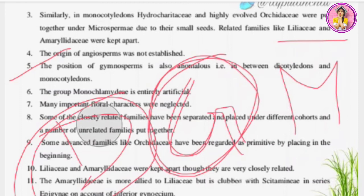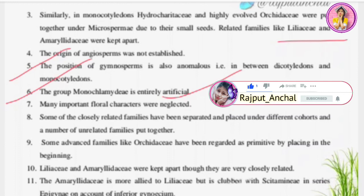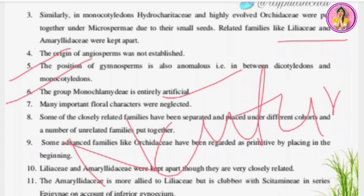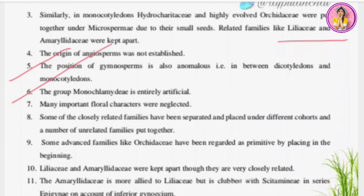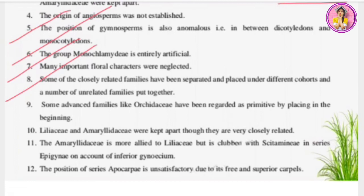Demerit six: the group Monochlamydae is entirely artificial. Even though the whole classification is called a natural system, Monochlamydae as a group is artificial — that doesn't make sense. Demerit seven: many important characters were neglected, and many floral characters of families were ignored. Demerit eight: some closely related families have been separated and placed under different cohorts, while a number of unrelated families were put together — this issue is repeated in multiple contexts.